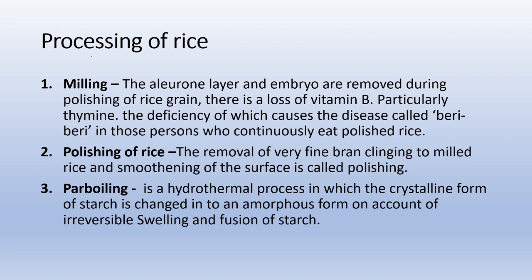Regarding processing of rice: there are mainly three methods — milling, polishing, and parboiling. Milling means removal of the aleurone layer and embryo during polishing. Continuous consumption of polished rice leads to beriberi disease, caused by deficiency of Vitamin B (lost during milling). Polishing means removal of very fine bran clinging to milled rice, smoothening the surface. Parboiling is a hydrothermal process in which the crystalline form of starch is changed into an amorphous form due to irreversible swelling and fusion of starch.